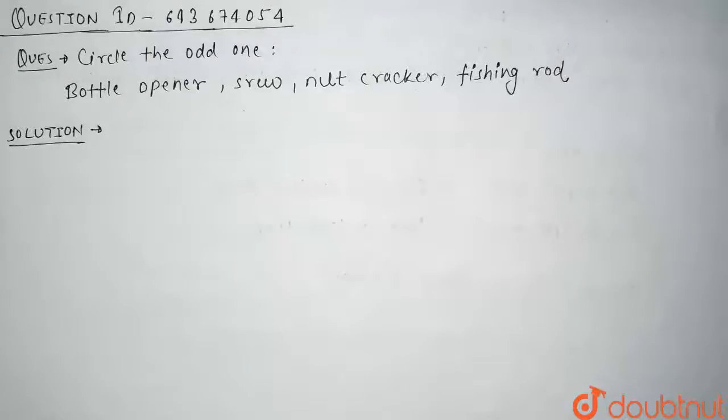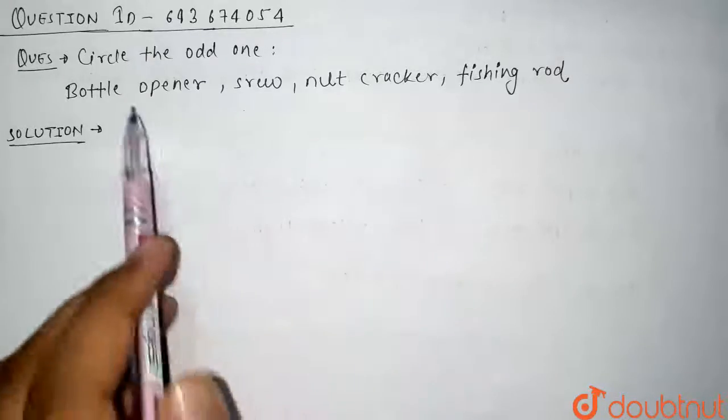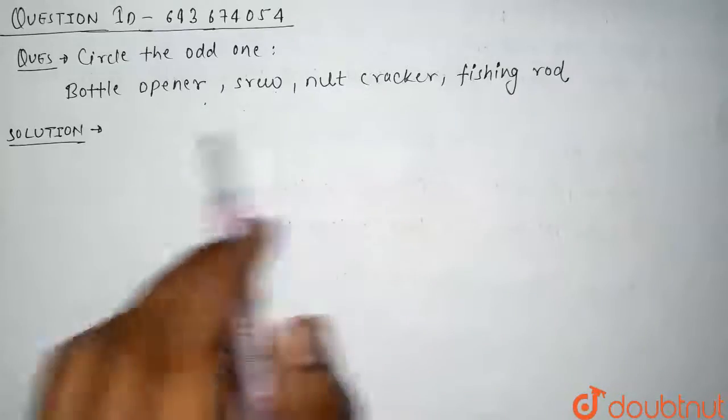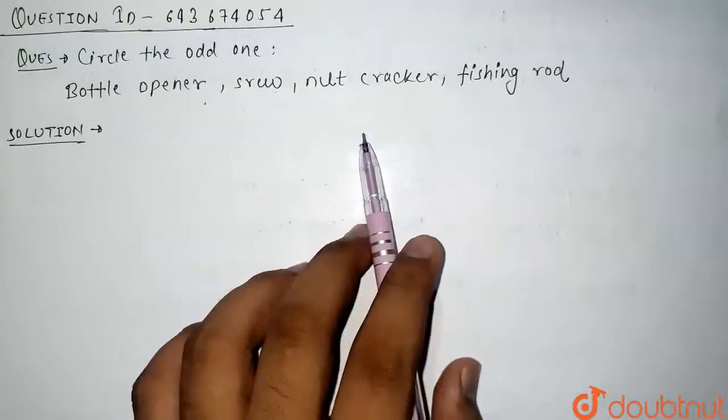Hello guys, so our today's question is circle the odd one: bottle opener, screw, nutcracker, fishing rod. So in this question we have been given four names and we have to circle the odd one.